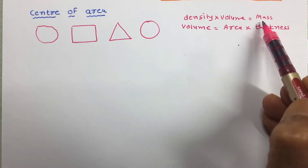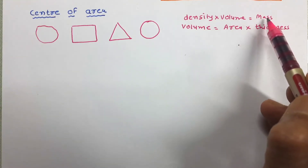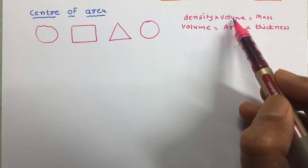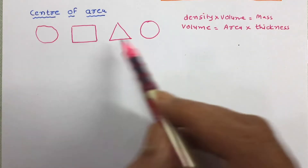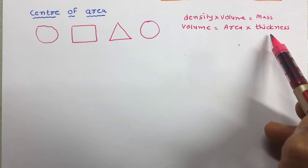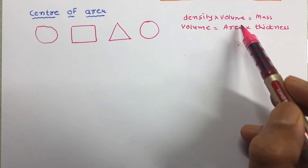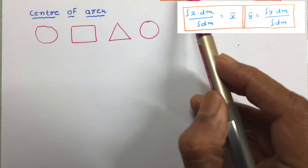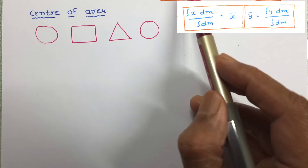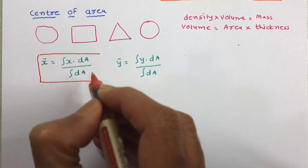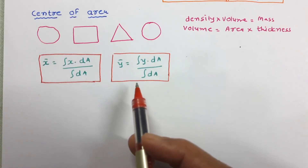We know that mass is equal to volume into density, and here the density is constant, so mass depends upon volume. Also, volume is equal to area into thickness, and since thickness is considered uniform, volume depends upon area. So when dealing with area, instead of mass we take area in the equations. The equation for center of area can then be written accordingly.